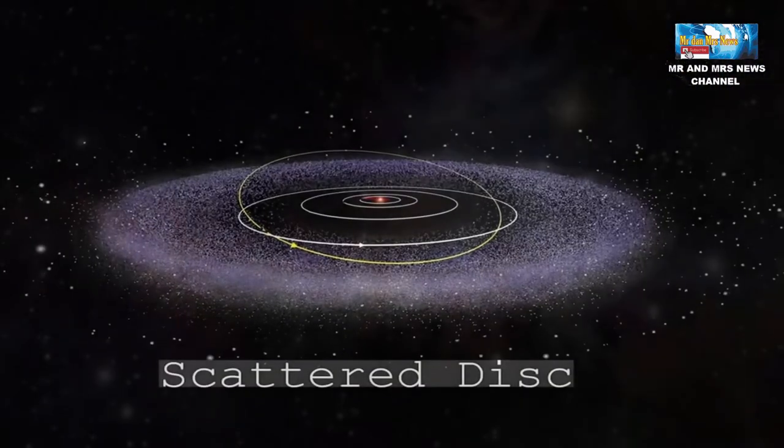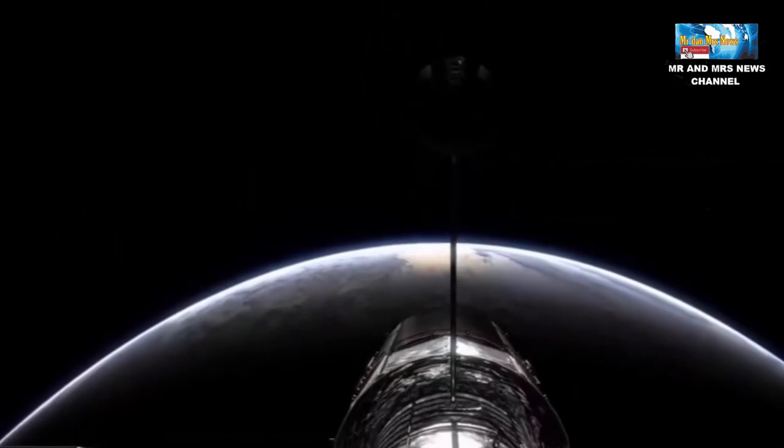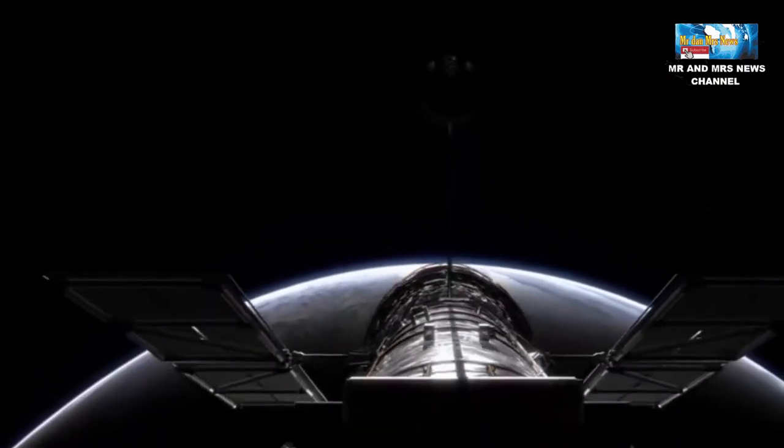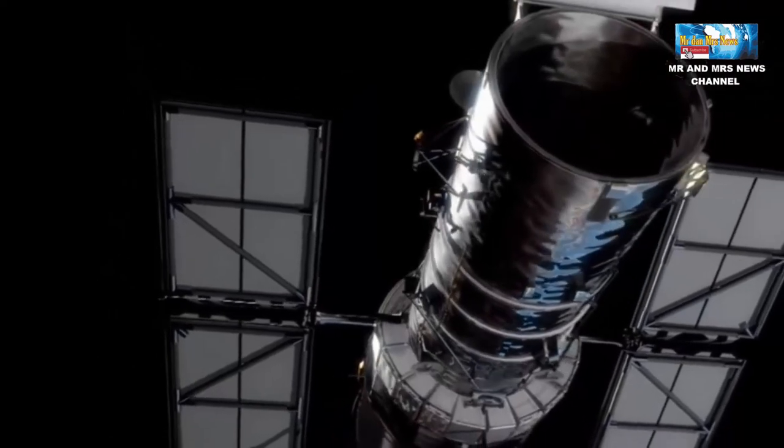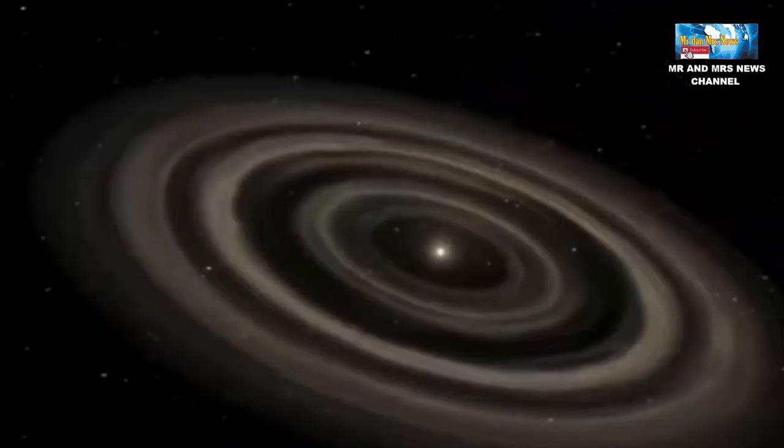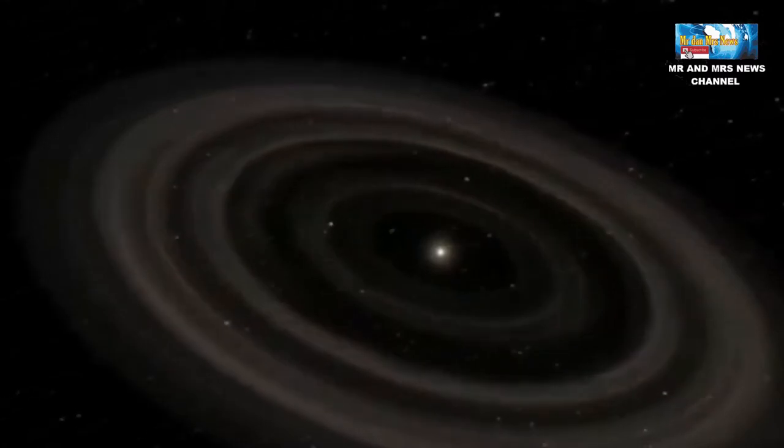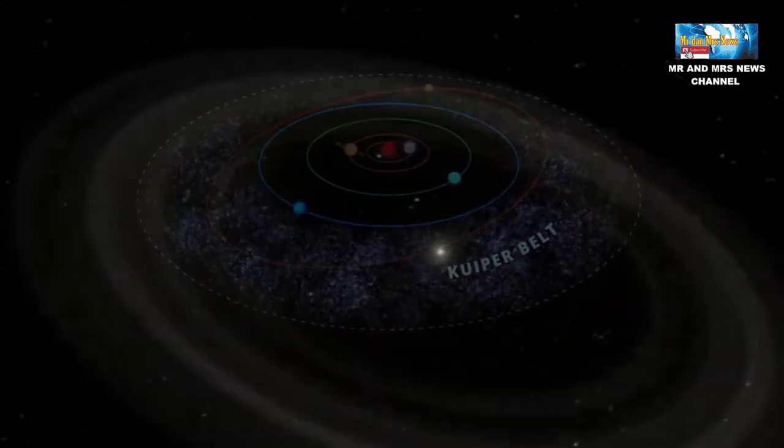Diameter Sabuk Kuiper nantinya bisa ditentukan dengan pencitraan memakai teleskop resolusi tinggi seperti teleskop luar angkasa Hubble dengan waktu okultasi pada saat suatu objek lewat di depan bintang atau memakai albedo dari suatu objek yang dihitung dari bintangnya.